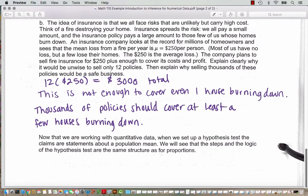Question B. The idea of insurance is that we all face risks that are unlikely but carry a high cost. Think of a fire destroying your home. Insurance spreads the risk. We all pay a small amount and the insurance policy pays a large amount to those few of us whose homes burn down. An insurance company looks at the record for millions of homeowners and sees that the mean loss from a fire per year is mu equals $250 per person. Most of us have no loss, but a few lose their homes. The $250 is the average loss.